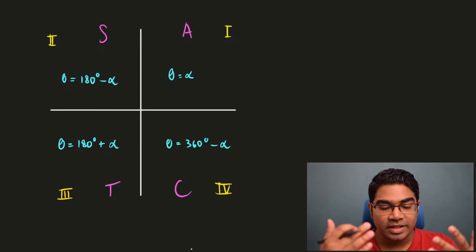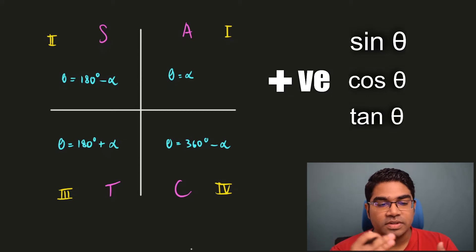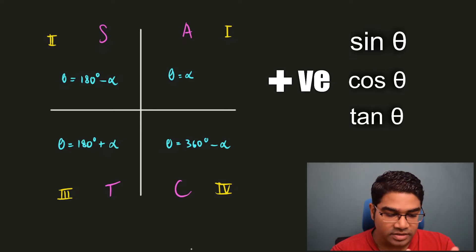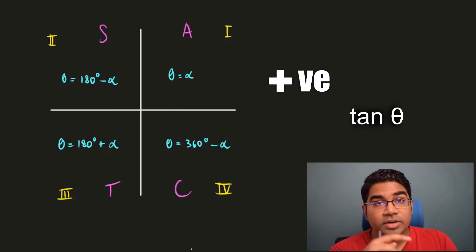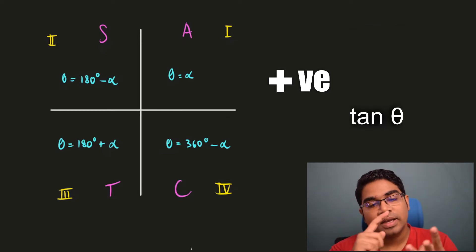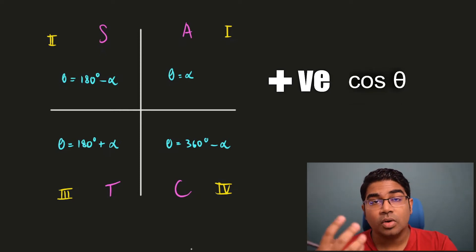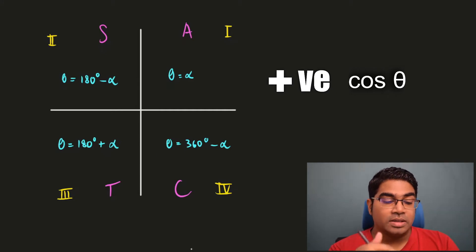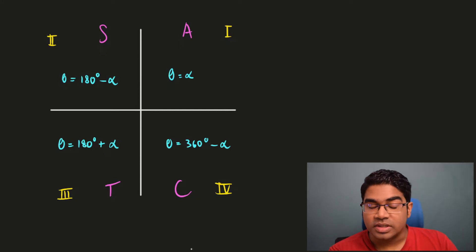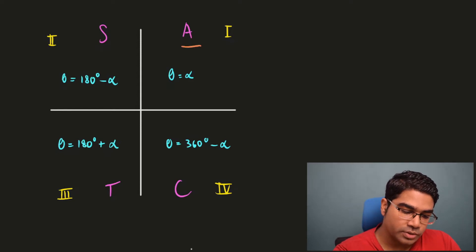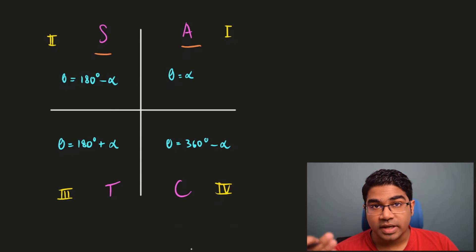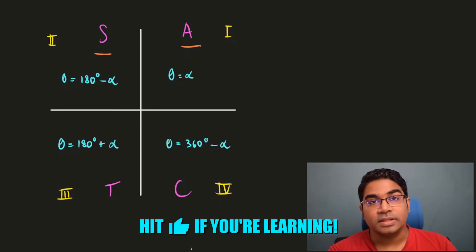In quadrant 1, A stands for all — all the trigonometric functions are positive: sine theta, cos theta, and tangent theta. For the second quadrant, S for sugar — only sine theta is positive, so cosine theta and tangent theta will be negative. In the third quadrant, only tangent theta is positive; sine theta and cosine theta will be negative. In the fourth quadrant, only cosine theta will be positive, so sine theta and tangent theta are negative.